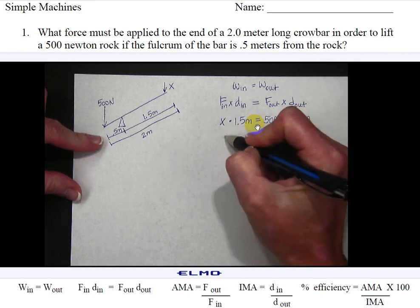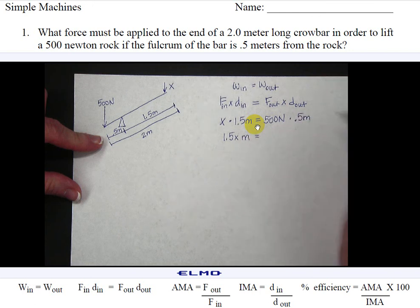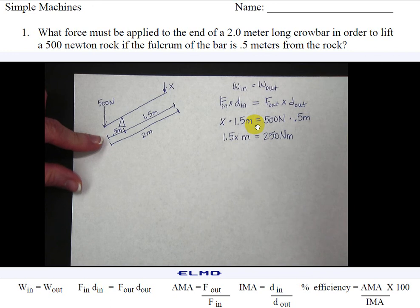So if I multiply these I get 1.5x meters equals 250 newton meters because newtons times meters.